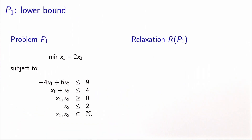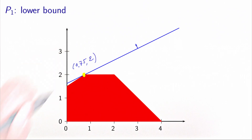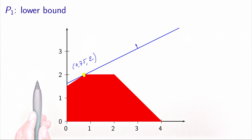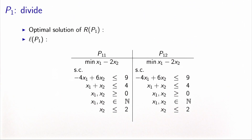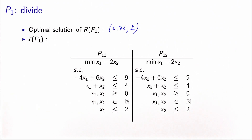We need to calculate a lower bound for problem P1 by solving its relaxation — ignoring the integrality condition to get a linear optimization problem, which we solve with the graphical method. The optimal solution is x1 = 0.75. Note that x2 is integer at this solution because the constraint x2 ≤ 2 is active. The lower bound is the objective function value at this solution: minus 3.25.